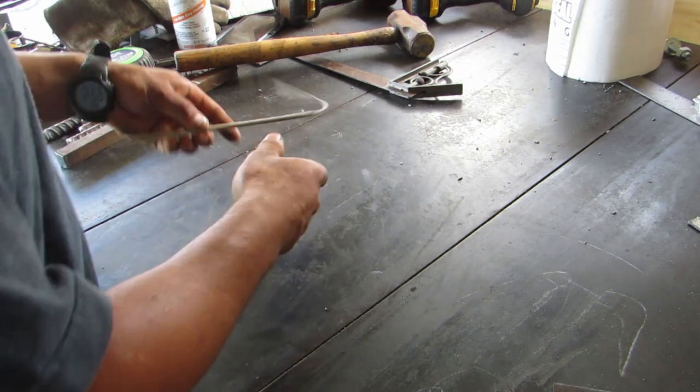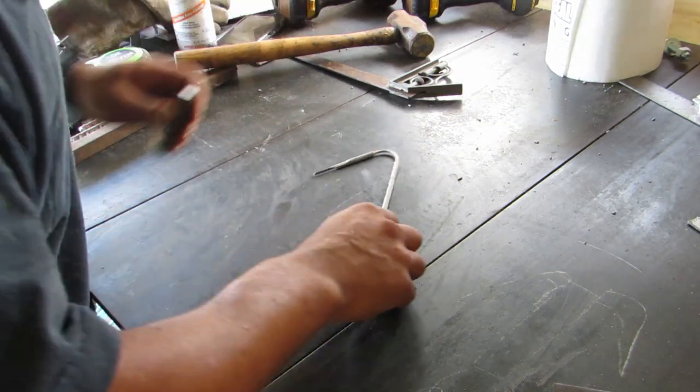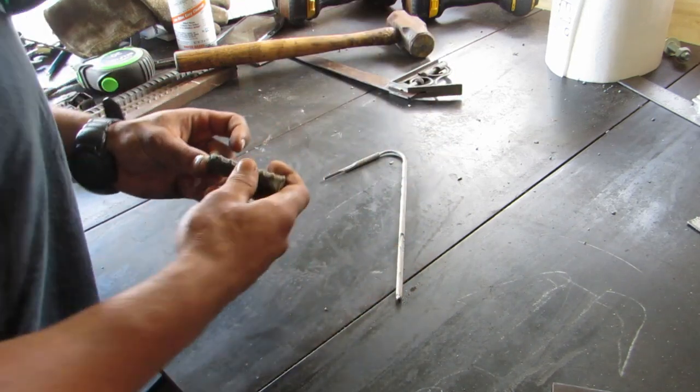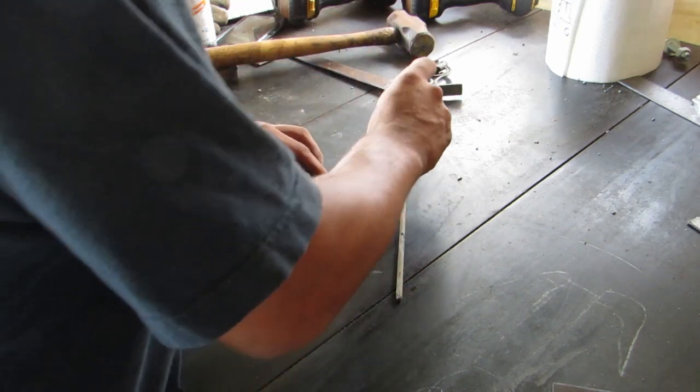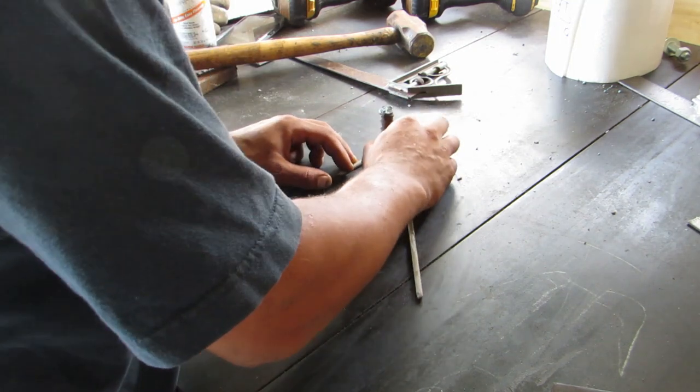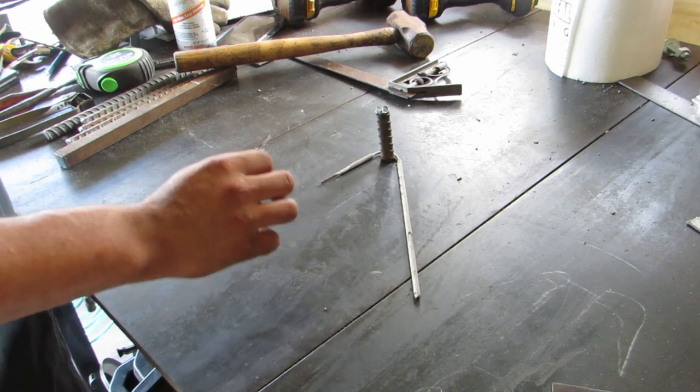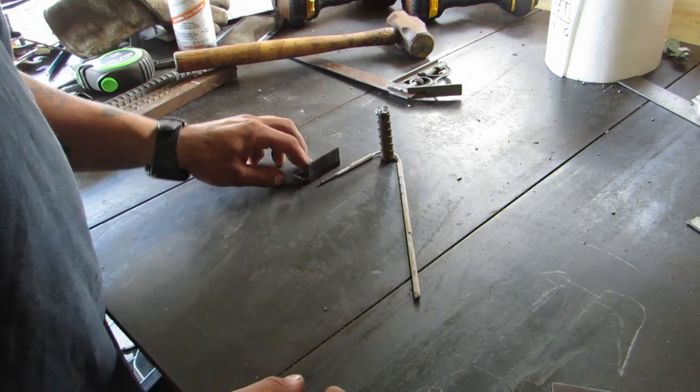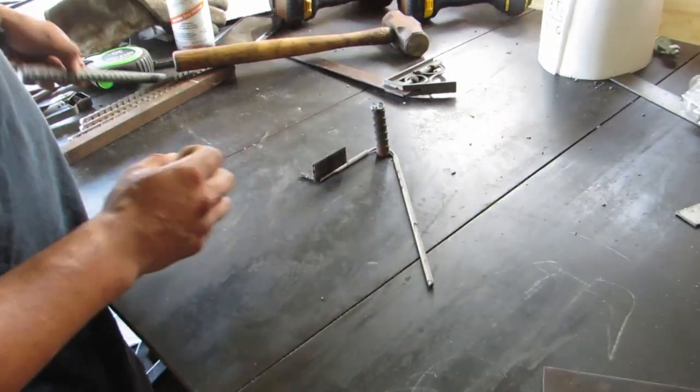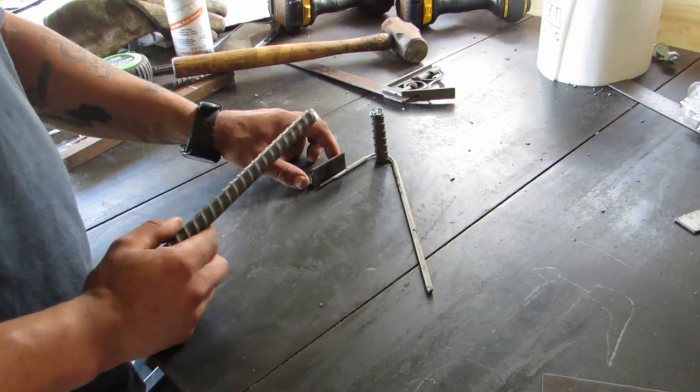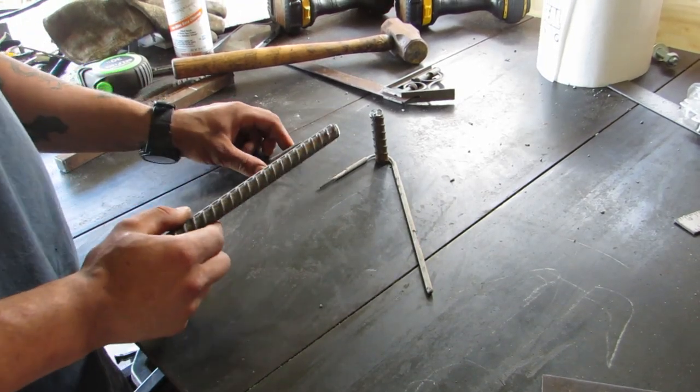Now it's time to set up our jig to bend these. You could just eyeball it. I like to bend things this way. So what I'm gonna do is just take this rebar like this. I'm gonna tack that into place. Then take a little piece of angle, put it there. Of course, adjusting for the width of this. And we'll go from there.